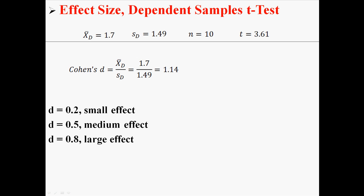Now what does that mean? Well if your D is about 0.2, that means you have a small effect. If it's about 0.5, that means you have a medium effect. And if it's about 0.8 or larger, that means you have a large effect. In this case, 1.14 indicates a large effect. That means our means are likely very different.